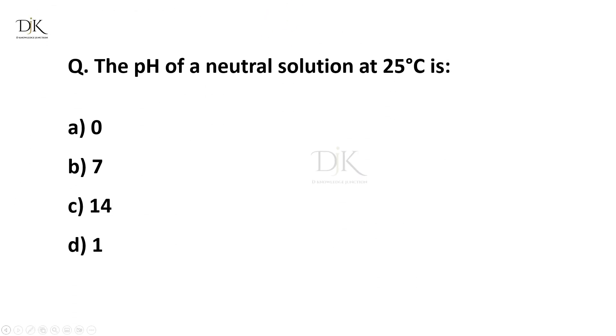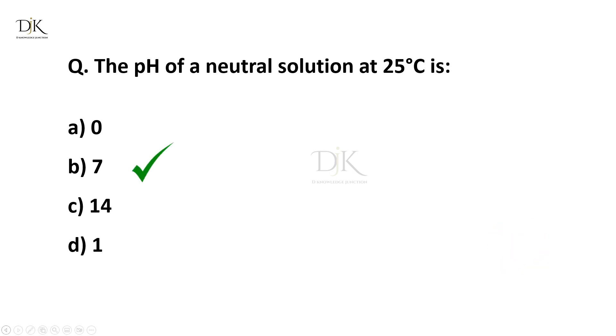The pH of a neutral solution at 25 degrees Celsius is — right answer is 7.